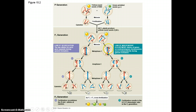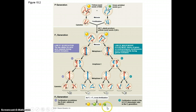The law of independent assortment tells us they really can line up in any way, shape, or form, as long as the homologues are lining up together. As a result, you can end up with all of these different variations in the gametes. When your F1 generation produces your F2 generation, you end up with a 9 to 3 to 3 to 1 ratio in an F1-F1 cross-fertilization.